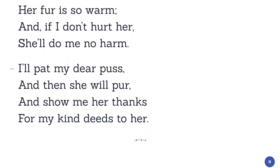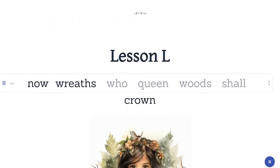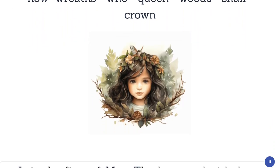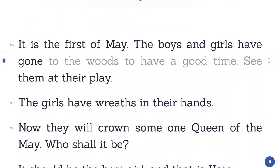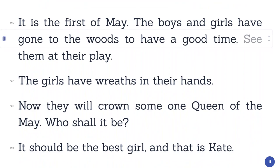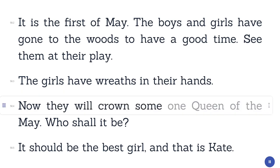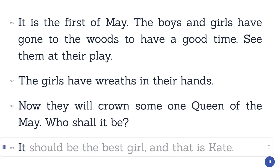Lesson 50. Now. Wreaths. Who. Queen. Woods. Shall. Crown. It is the first of May. The boys and girls have gone to the woods to have a good time. See them at their play. The girls have wreaths in their hands. Now they will crown someone queen of the May. Who shall it be? It should be the best girl, and that is Kate.